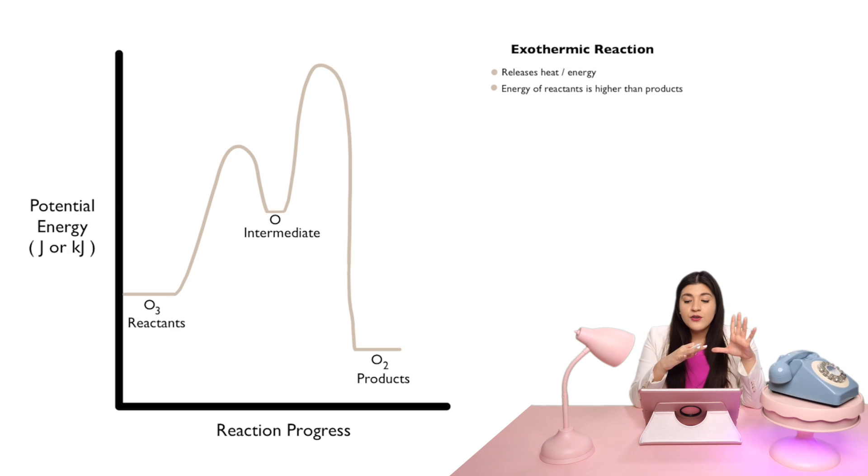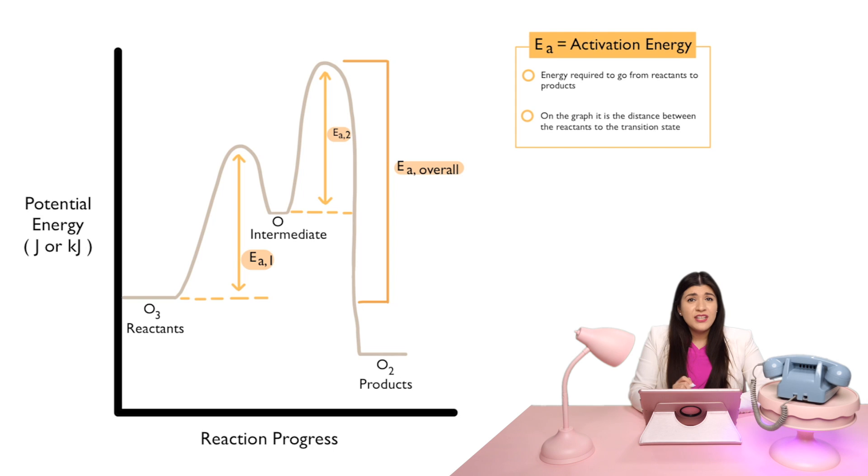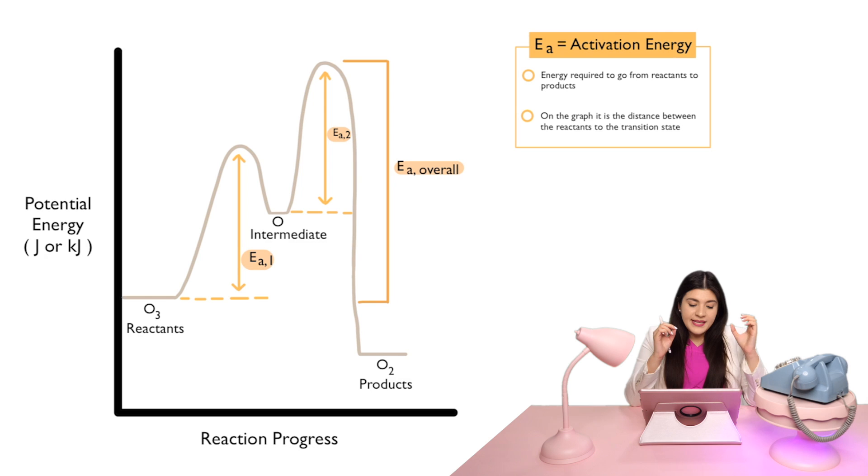So, now that we understand what type of reaction this is, let's move on with how to label every single point and understanding what everything means. So, the next thing we're going to look at is activation energy, which is represented by this symbol. What activation energy is, it's the energy required to go from our reactants to our products. And in this case, it's a little bit different.